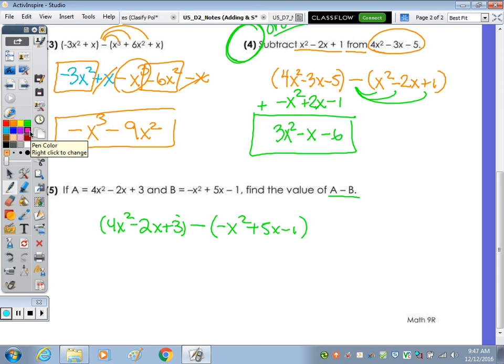Again, negative times negative is positive x squared minus 5x plus 1. Add straight down. 4 plus the 1 is 5x squared. Negative 2 minus 5 is negative 7, keeping the x. And 3 plus 1 is 4.